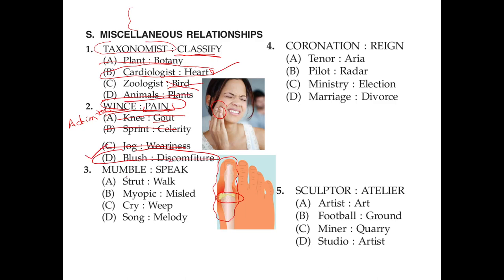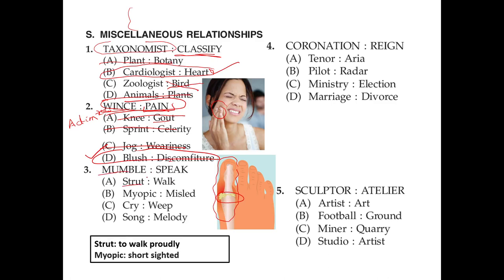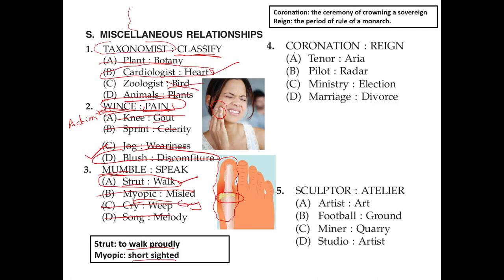Mumble and speak: mumble is a type of speaking with a very low voice. Strut is when you walk proudly. Myopic means short-sighted. Strut is a type of walking done proudly — that's the right answer because strut relates to walk the same way mumble relates to speak. Cry and weep could be right but the sequence is not correct — if cry were on one side and weep on the other it might work. Song and melody have no direct sub-type relation here.